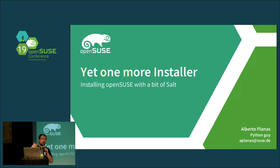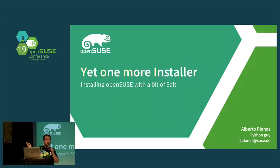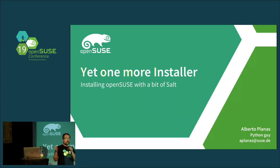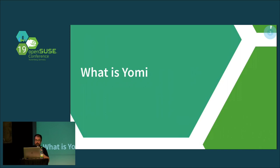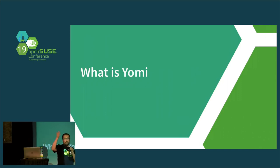We are going to try to cross this door in the other direction with JOMI. Basically, we are going to talk about how to install openSUSE using only the Salt stack. You know that there are different ways and technologies to install openSUSE — we have AutoYaST and many others — but today we are going to use only Salt. How many of you know about Salt? Perfect.